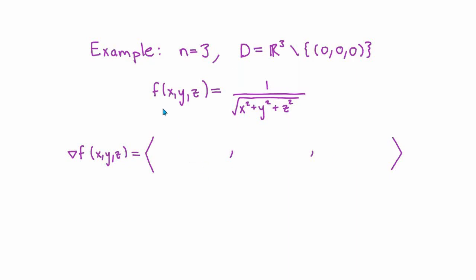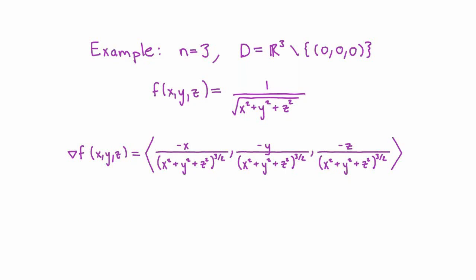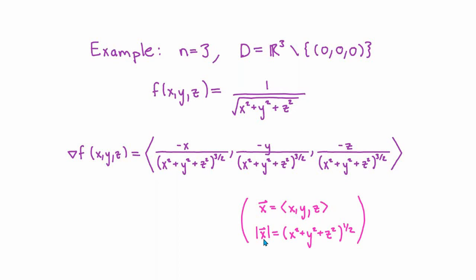The first component of the gradient vector is the partial derivative of F with respect to x, the second with respect to y, and the third with respect to z. Writing X⃗ for the vector (x, y, z), the length of X⃗ is √(x² + y² + z²), so the denominator of each component is |X⃗|³. The gradient can be written as (1/|X⃗|²) times (−X⃗/|X⃗|).